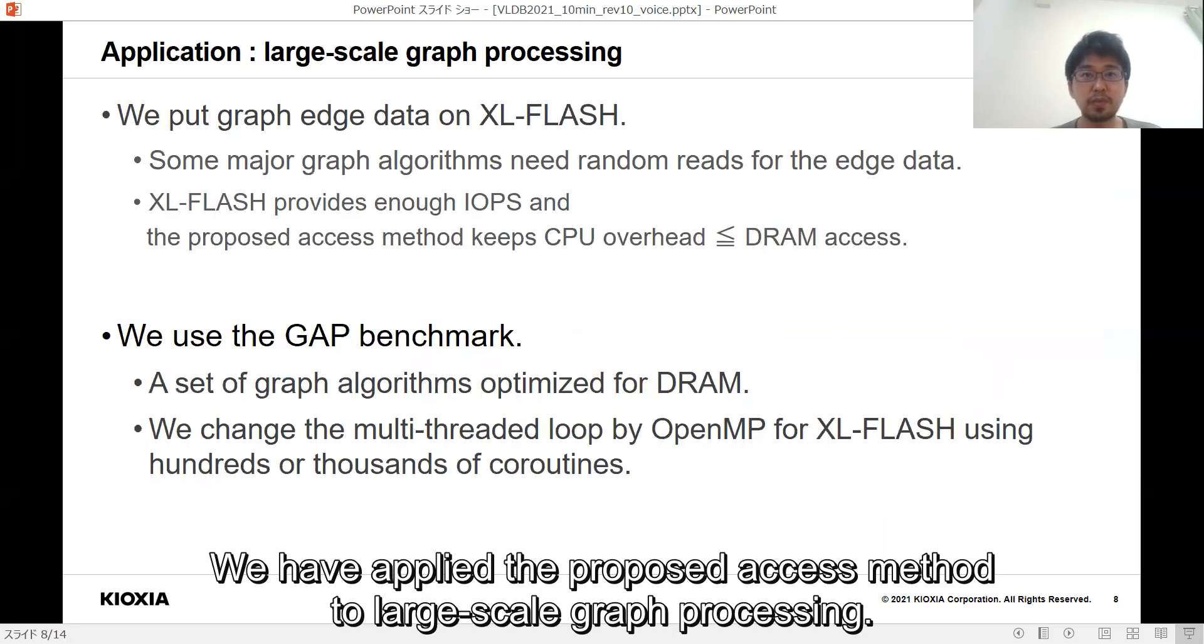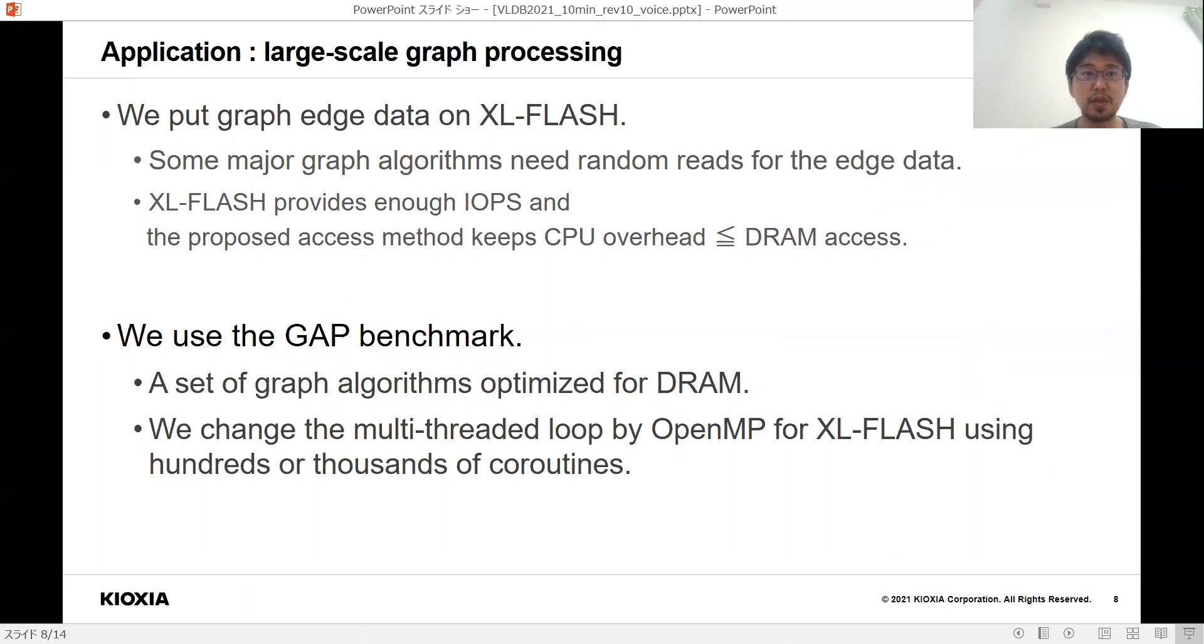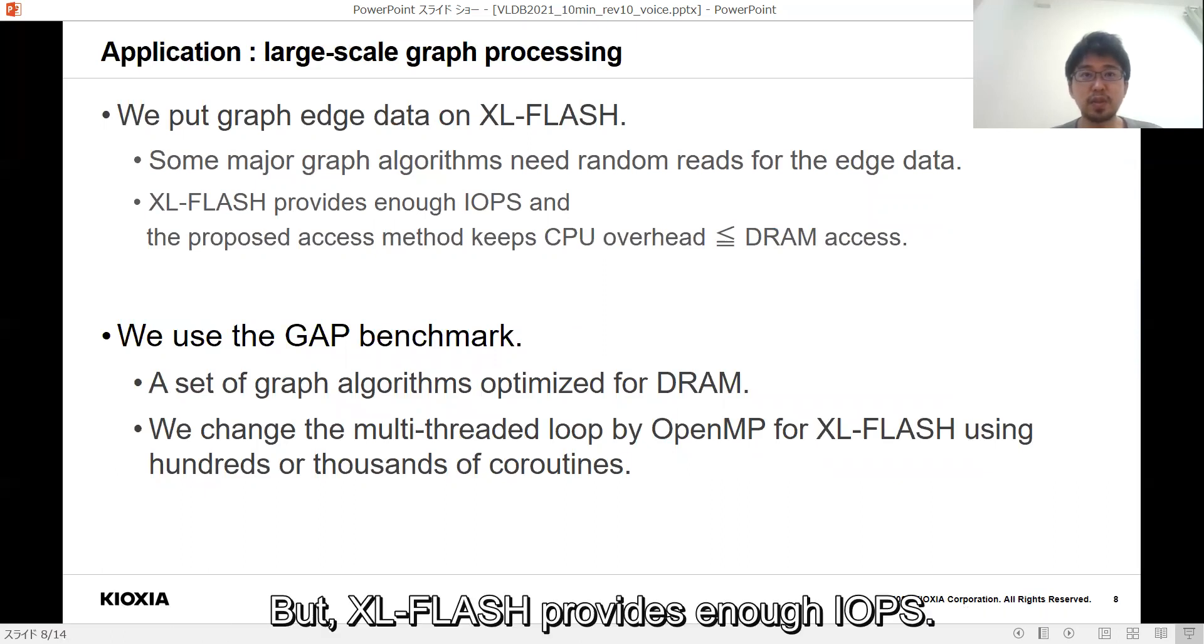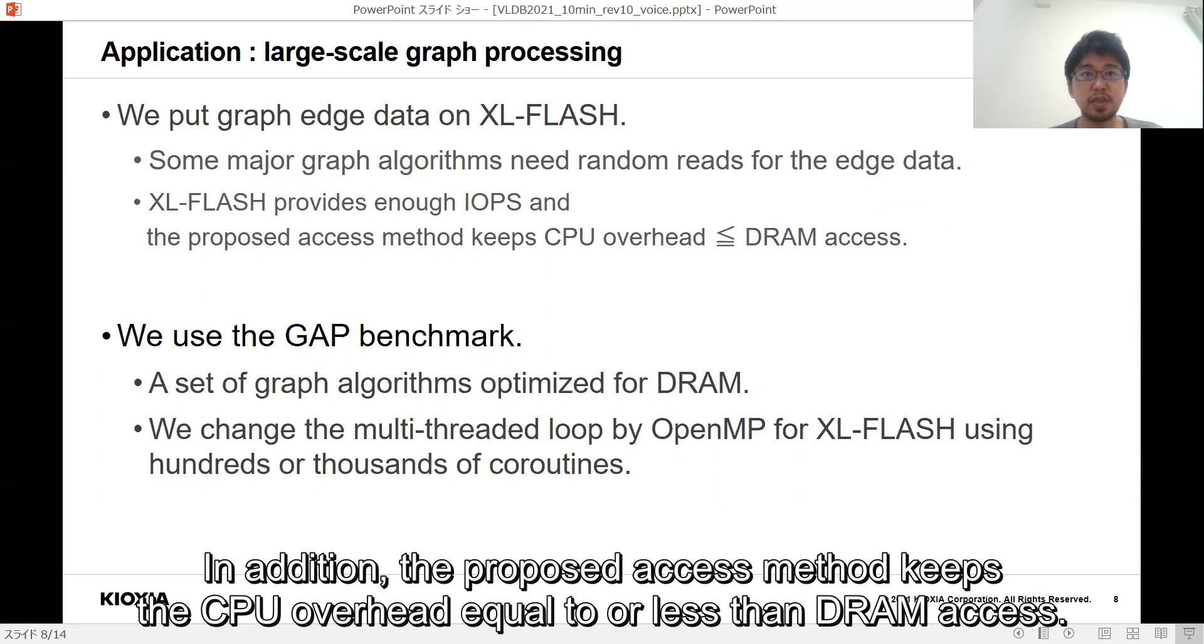We have applied the proposed access methods to large-scale graph processing. We put graph edge data on XL-FLASH. Some major graph algorithms need random reads for the edge data, but XL-FLASH provides enough IOPS. In addition, the proposed access method keeps the CPU overhead equal to or less than DRAM access.